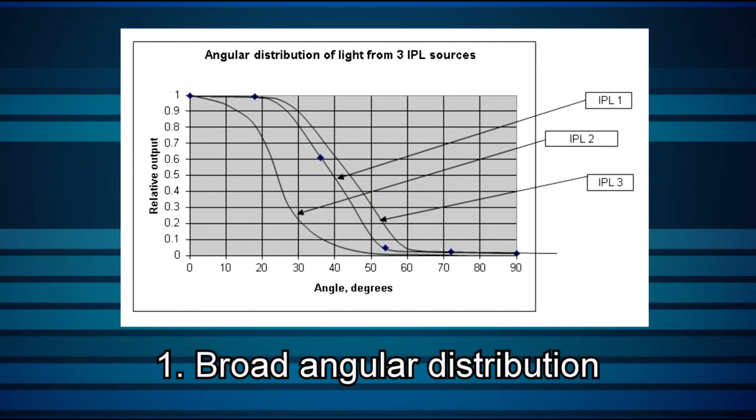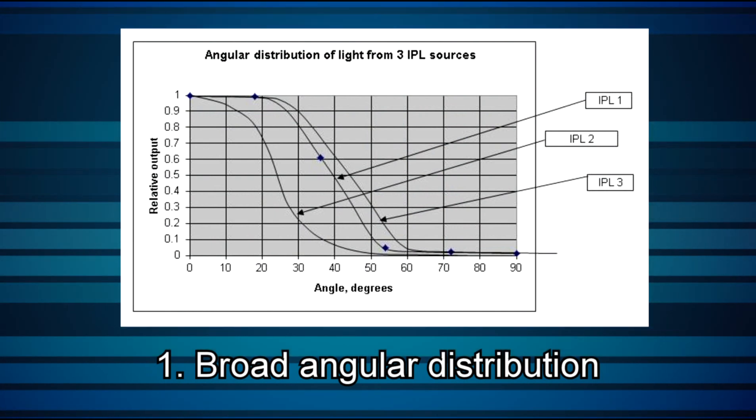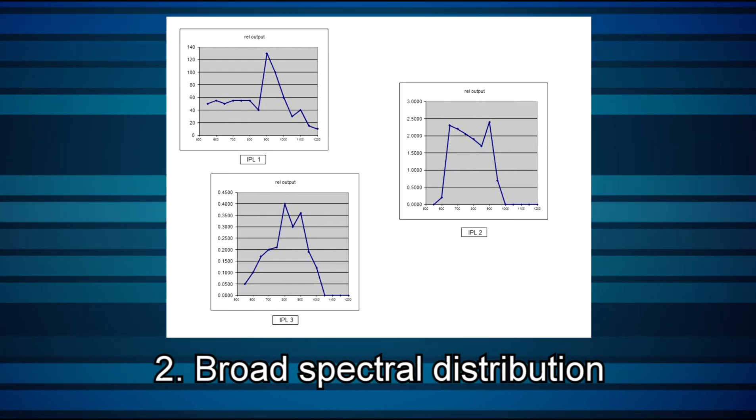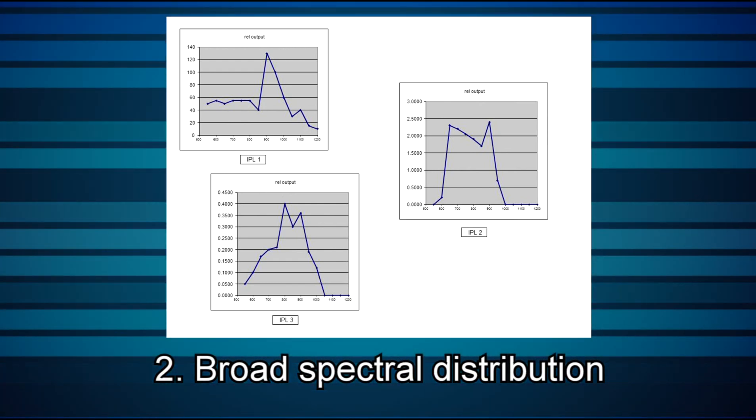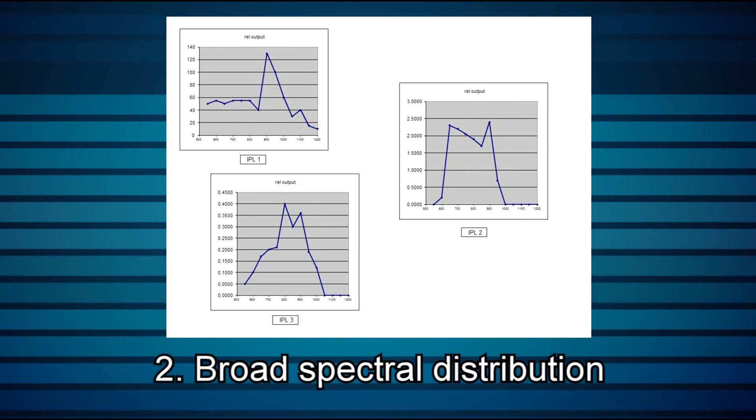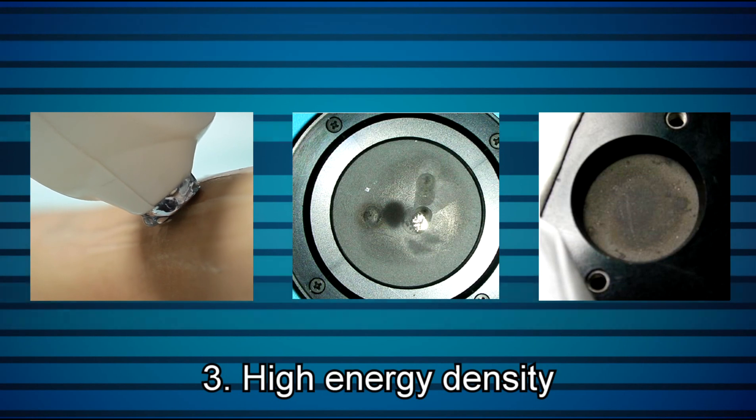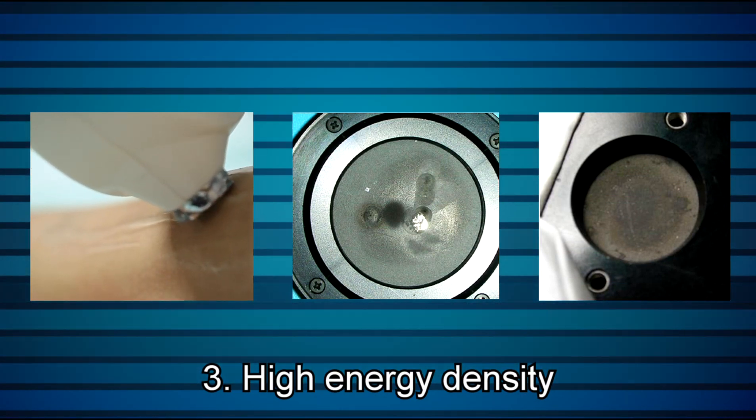Measuring the energy of an IPL pulse, though, is tricky. IPL sources present some unique challenges when it comes to measuring them: 1. Broad angular distribution, which makes it difficult to capture the full beam. 2. Broad spectral distribution, which makes it difficult to maintain accurate calibration. 3. High energy and energy density, so the sensor's absorber had better be able to take it without damage.